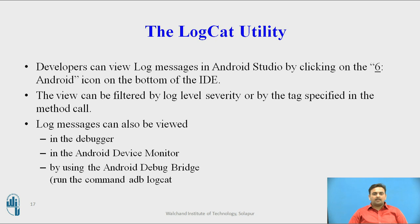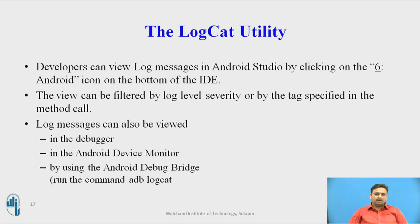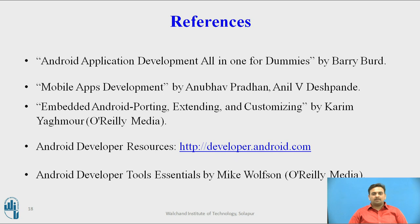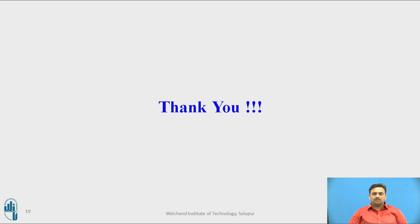The LogCat Utility works on the same principle — it uses severity level by tag and you can filter messages according to the tags assigned to them. You can access it by clicking the Android icon in the IDE. The tools we have discussed — the Debugger, ADB, and Android Device Monitor — can all use this LogCat Utility. These are some references used to make this video. Thank you.